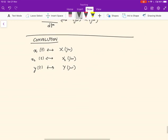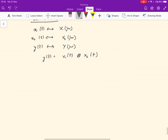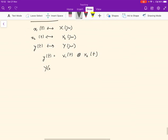And let's say that y(t) is given by the convolution of x₁(t) and x₂(t). If that's the case, then Y(jω) is given by the multiplication of X₁(jω) multiplied by X₂(jω). So this is really super important.